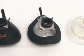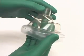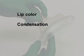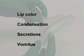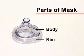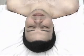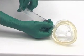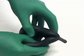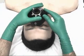There are many types of face masks, varying in design, size, and construction materials. Transparent masks are preferred because they allow for inspection of lip color, condensation, secretions, and vomitus. Face masks consist of three parts: the rim, the body, and the connector. The rim of the mask provides the seal with the face. Many masks have an inflatable cushioned rim which creates a better seal with facial contours. Some masks have a malleable body which can be molded to the face, thus reducing dead space.